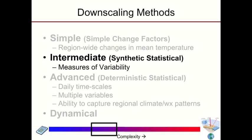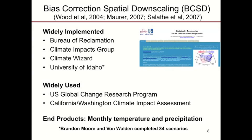The problem with those very simple change factor type approaches is that they're unable to get at higher-order climate statistics. It's problematic when you're really trying to address low-risk, high-impact climate extremes, and those extremes are inherently tied to impacts. Moving on from that, we can approach the downscaling methods being used currently. In the intermediate category, we're dealing with synthetic statistical downscaling methods that are able to incorporate measures of variability. Probably the most frequently used and widely implemented downscaling method is the bias-corrected spatial downscaling, or BCSD method.